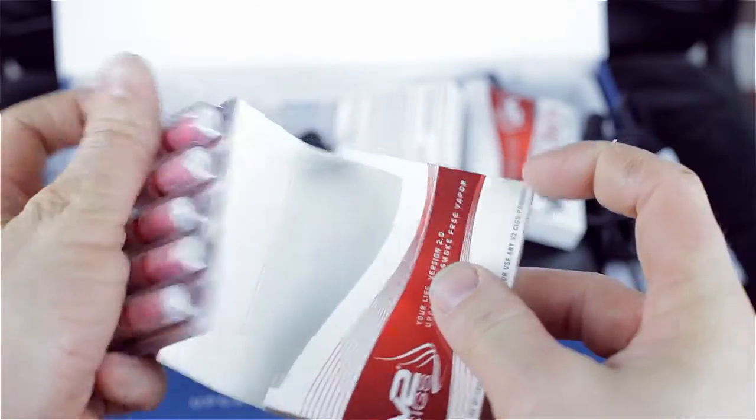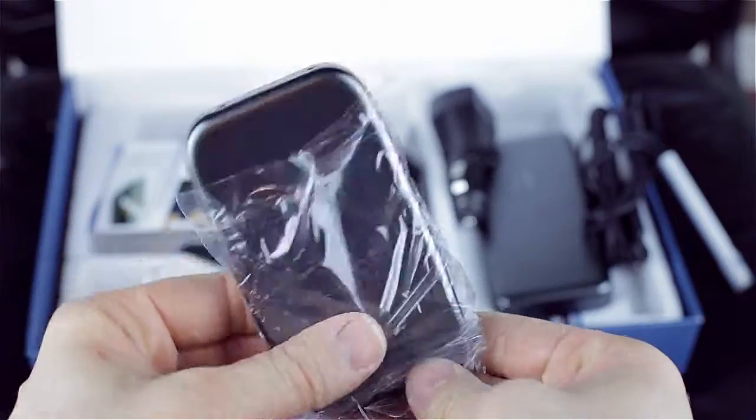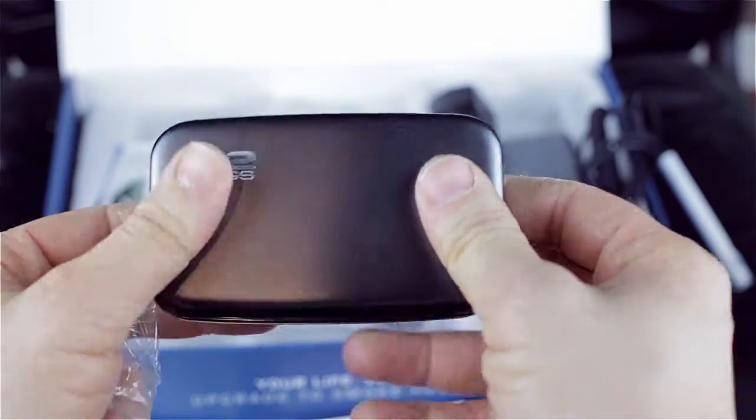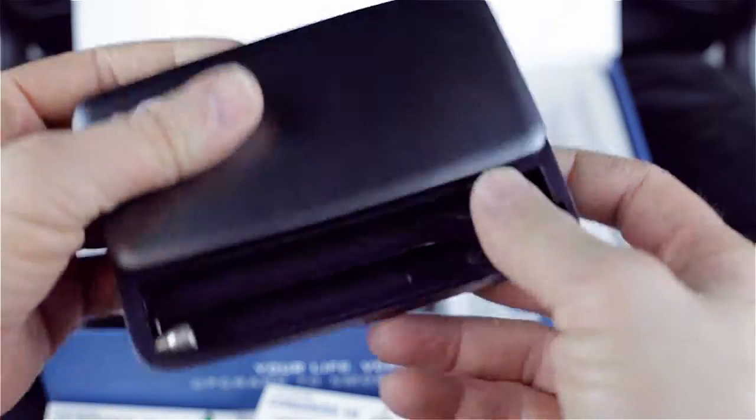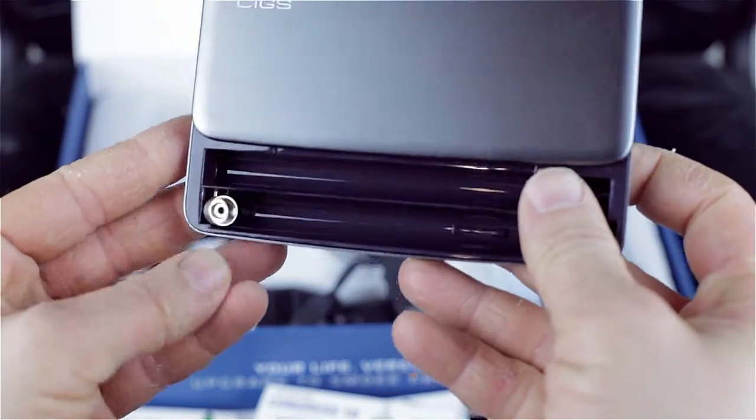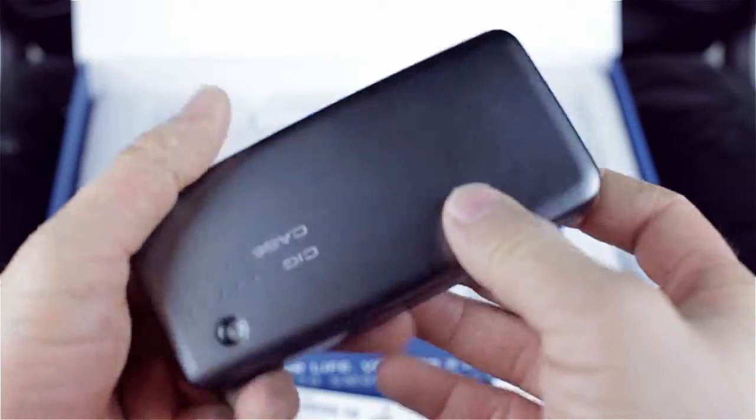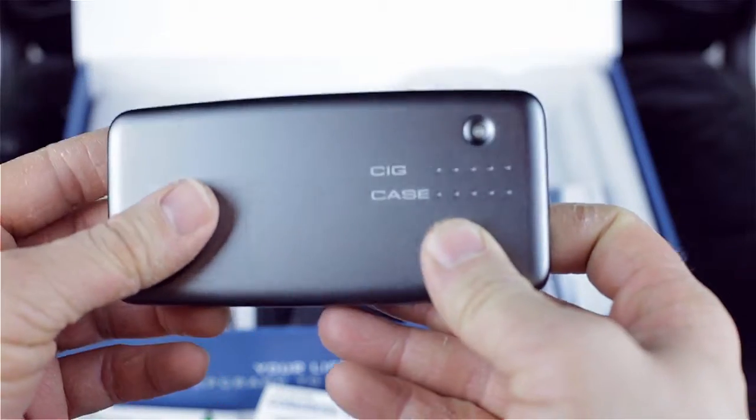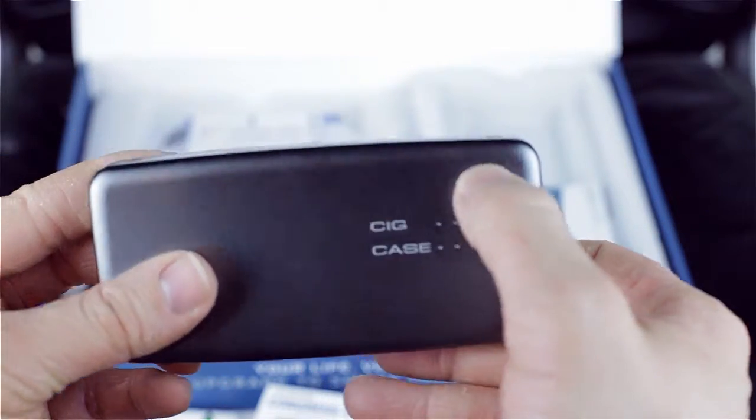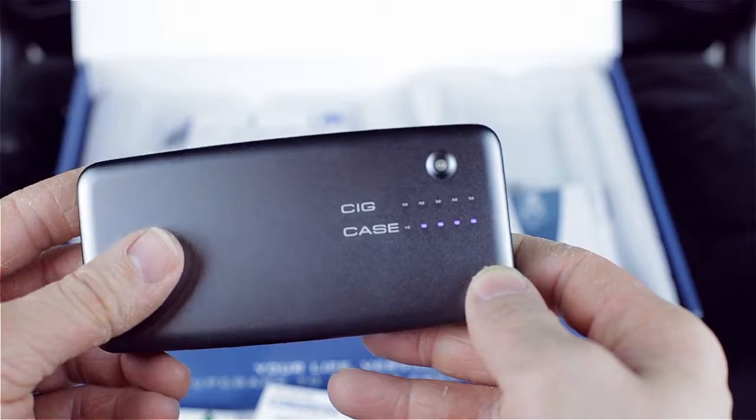You're also going to get two cases in the V2 Ultimate Kit. One is a metal case and the other is a portable charging case which allows you to charge your V2 cig right in the case. Pretty cool. V2 once again gives you choices, offering graphite, stainless, or white for your case color.